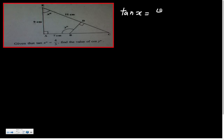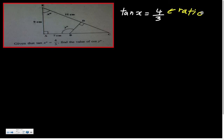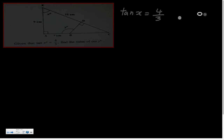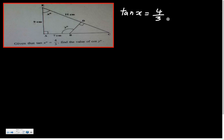So tangent x equals 4 over 3. Whenever you see tangent x, you need to find x. You must always understand that 4 over 3 is a ratio — it is not the actual length. This is the ratio.